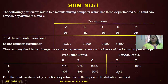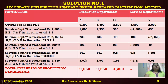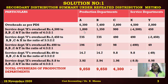So Rs. 4,500 is redistributed to A, B, C, and Y in the ratio 4:3:2:1. That gives: 4,500 × 4/10 = 1,800 for A; 4,500 × 3/10 = 1,350 for B; 4,500 × 2/10 = 900 for C; and 4,500 × 1/10 = 450 for Y. Under column X, I write minus 4,500, indicating that this amount has been fully redistributed.